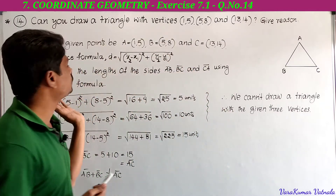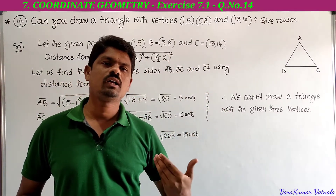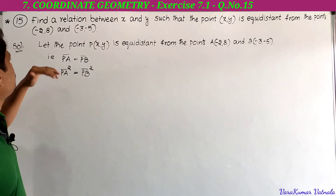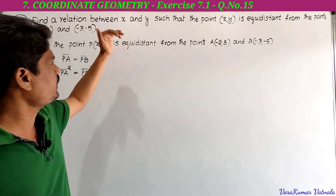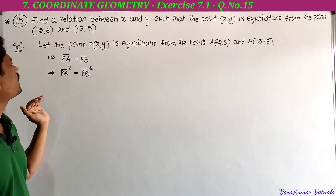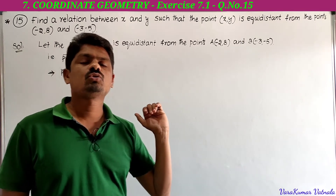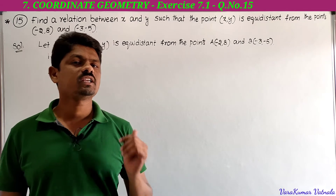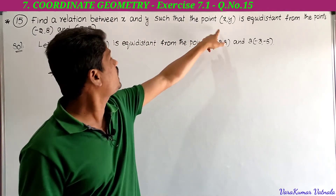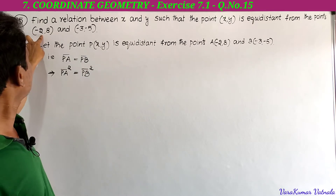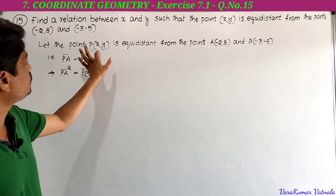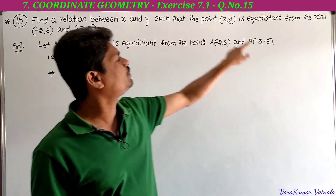This was problem 14 in exercise 7.1. Now let's look at problem 15. The question asks: find a relation between x and y such that the point (x, y) is equidistant from the points (-2, 8) and (-3, -5). Let P = (x, y), A = (-2, 8), and B = (-3, -5). Since P is equidistant from A and B, PA = PB.